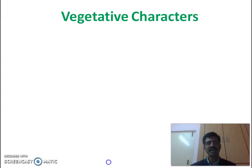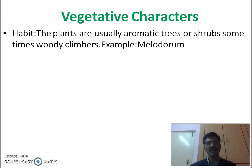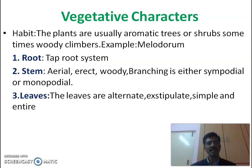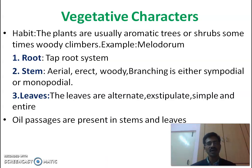Now we come to vegetative characters. The plants are usually aromatic small trees or shrubs, and sometimes woody climbers — examples include Melodorum and Artabotrys. The root has a taproot system. The stem is aerial, erect, and woody; branching is either sympodial or monopodial. Leaves are arranged alternately, exstipulate (without stipules), simple, and entire. Oil glands are observed in stems and leaves.